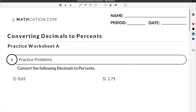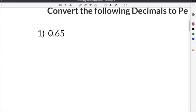Let's do a couple practice problems on our converting decimals to percents worksheet. The first problem on our converting decimals to percents worksheet gives us 0.65. Now we know in order to convert a decimal to a percentage, we have to multiply our decimal times 100.